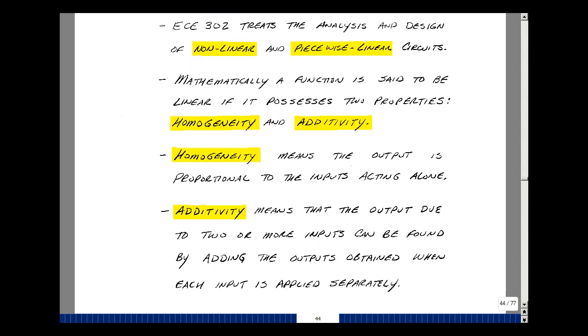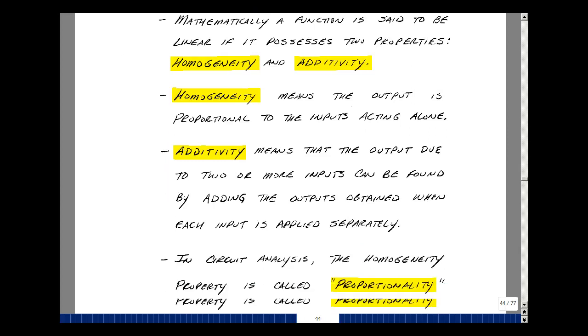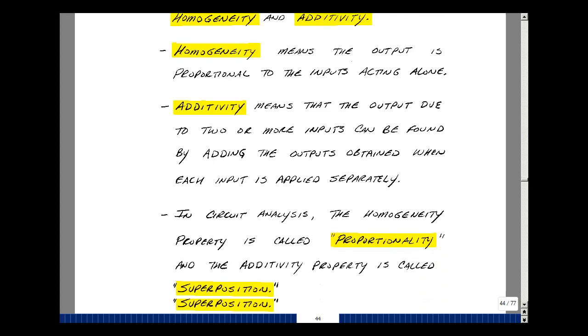I'll explain this through a series of examples. In circuit analysis, the homogeneity property is called proportionality, and the additivity property is called superposition.